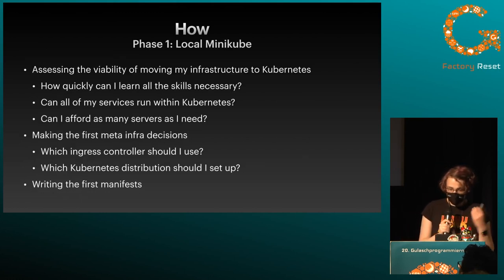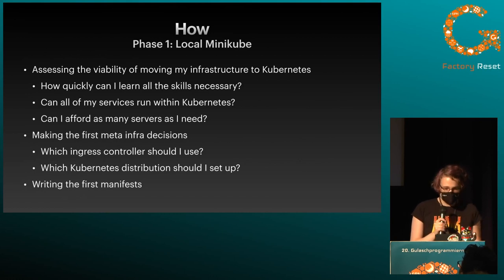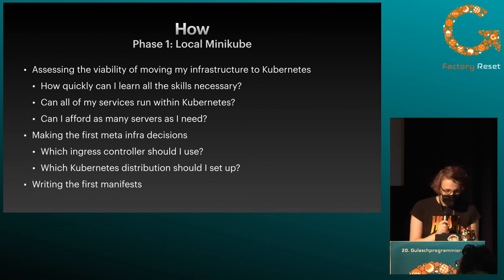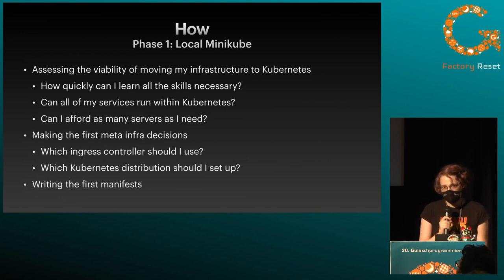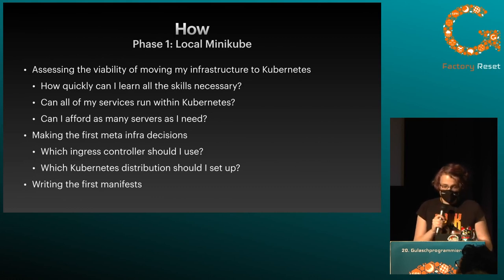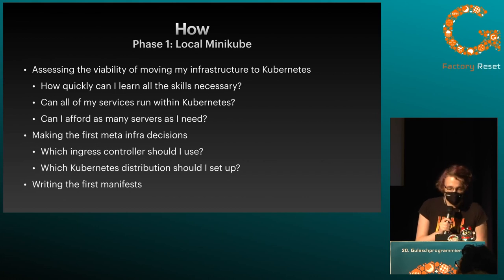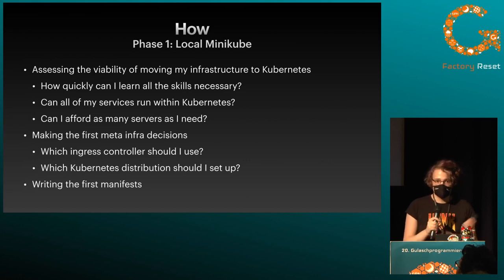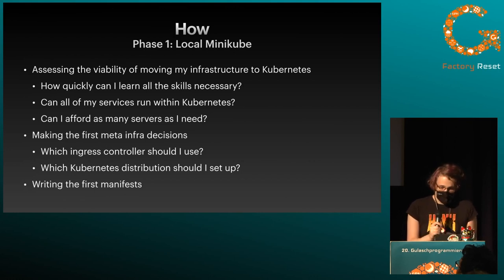Phase one: local Minikube. First of all — is this viable for me? Can I do this? Can I learn this quickly enough that I don't get bored before I finish? Can I even afford the servers necessary? Servers are pretty cheap in Germany compared to other places, but they're still expensive. I also made the first infrastructure decisions: which ingress controller should I use? Which Kubernetes distribution should I set up? I also wrote the first deployment manifests — they're not scripts but they describe my deployments. And I got my blog running inside my local cluster.